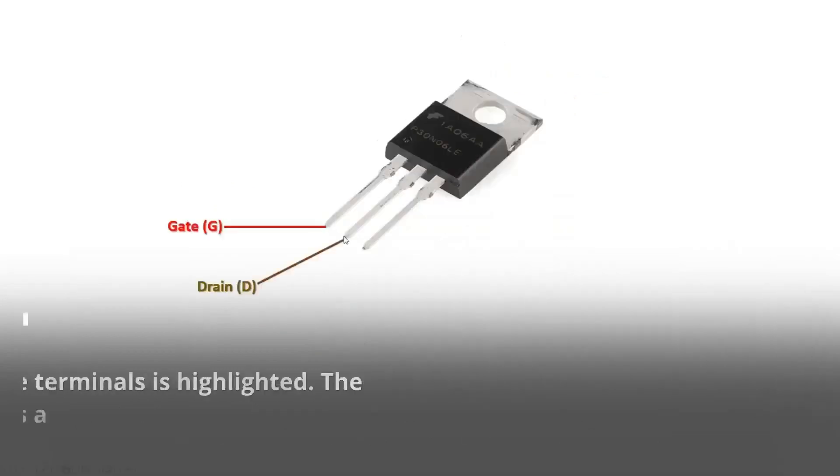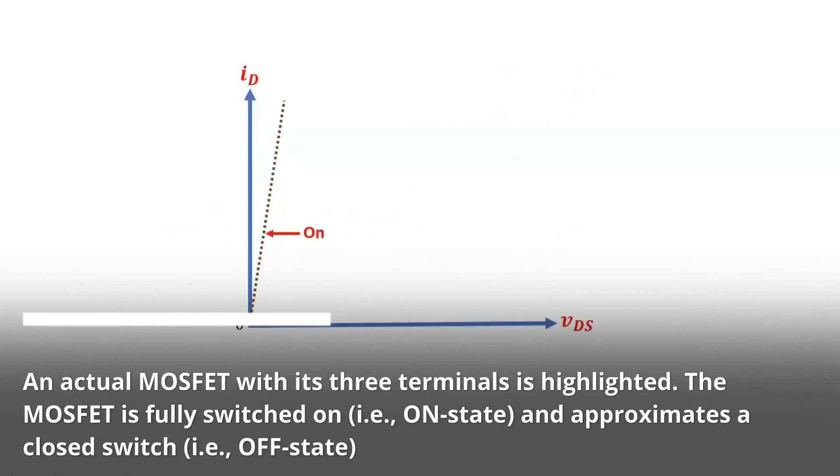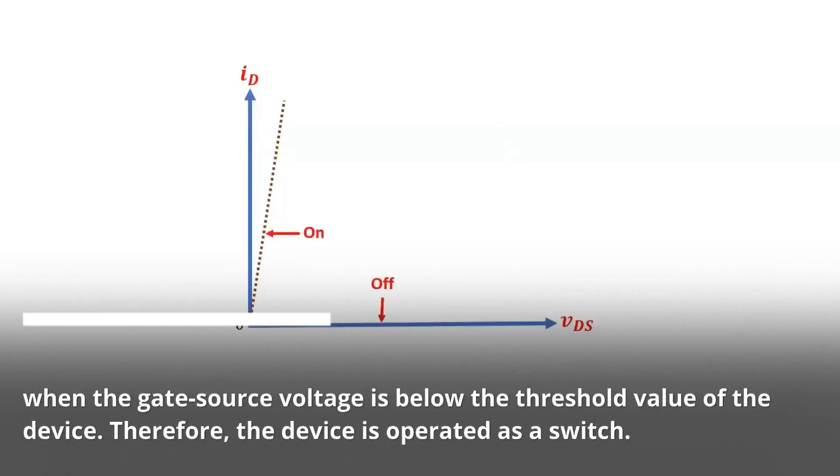An actual MOSFET with its three terminals is highlighted. The MOSFET is fully switched on, i.e., on-state, and approximates a closed switch, i.e., OFF state, when the gate source voltage is below the threshold value of the device. Therefore, the device is operated as a switch.